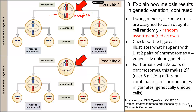In meiosis I, you have different steps — prophase I, metaphase I. In metaphase I, the homologous chromosomes are all paired up in the middle. This pair of homologous chromosomes aligns right next to each other in the middle of the cell. The next step is they are going to be separated — the two homologous chromosomes will end up in two different cells. When the homologous chromosomes line up in the middle, they line up very randomly.